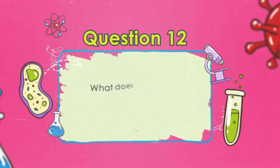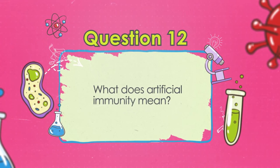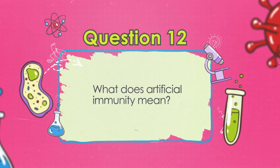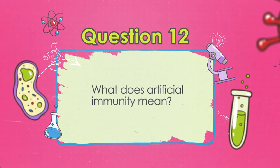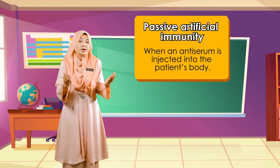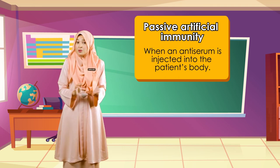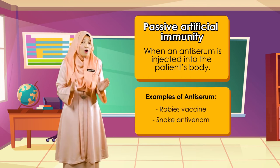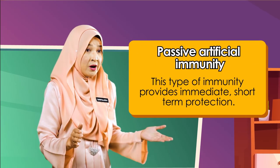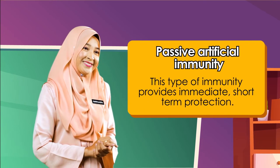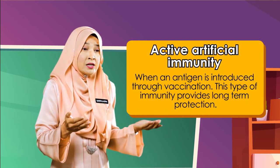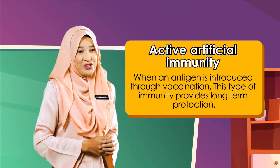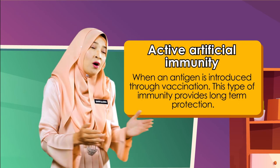Artificial is something made or produced by human beings rather than occurring naturally. So what does artificial immunity mean? Passive artificial immunity is when an anti-serum is injected into the patient's body — the rabies vaccine and snake anti-venom are two examples of anti-serum. This type of immunity provides immediate short-term protection. Active artificial immunity is when an antigen is introduced through vaccination, providing long-term protection.